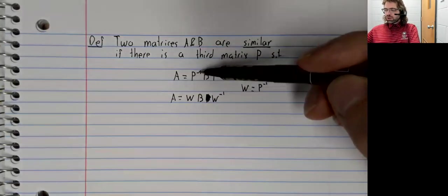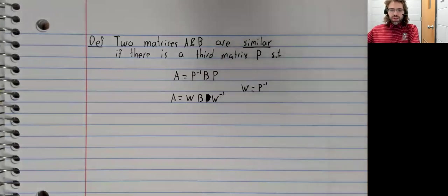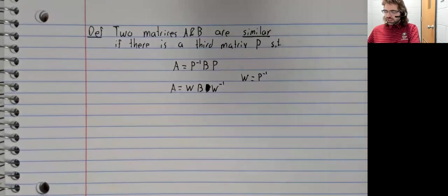So where the inverse goes doesn't matter. What matters is that you have a matrix on one side of B and the inverse of that matrix on the other.